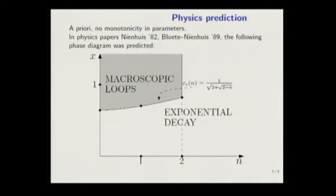Then let's move to physics predictions. Well, prediction is that there are macroscopic loops for n between 0 and 2 and x larger than 1 over root 2 plus root 2 minus n. So, this line, this curve corresponds to this parabolic curve. So here there should be macroscopic, including the boundary. And outside there should be exponential decay of the loop lengths. So, loops will be very small.